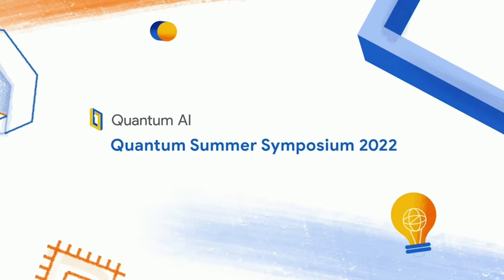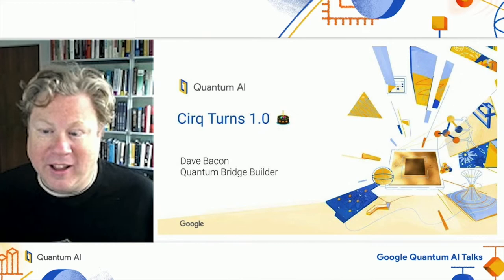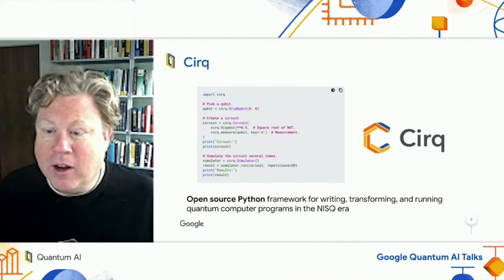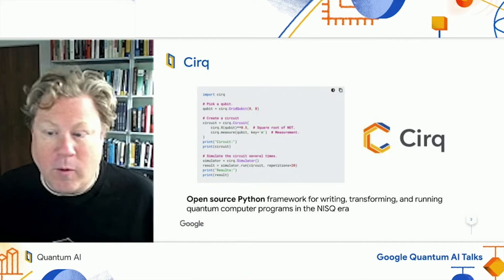Hello, my name is Dave Bacon. I'm a software engineer here at Google on the Quantum AI team. Today I'm happy to talk to you about Cirq turning 1.0. Cirq is a Python framework that is open source and is used for writing, transforming, and running quantum computing programs. It's designed for the NISQ era — for quantum computations with a few hundred qubits and maybe a thousand or so operations.